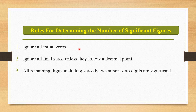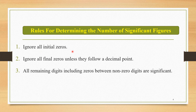Now, after studying the meaning of significant figures, we look at the rules for determining the number of significant figures. Three important rules are always followed. The first rule is: ignore all initial zeros — if initial zeros are present in a number, we neglect them. The second rule is: ignore all final zeros unless they follow a decimal point — we ignore final zeros except when they follow a decimal point, in which case we consider them.